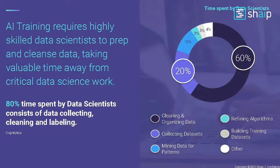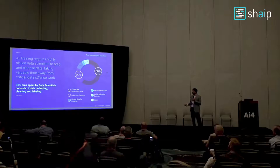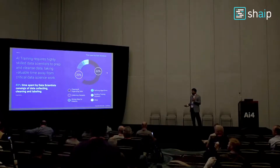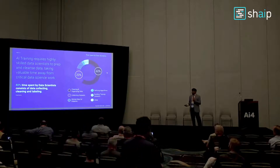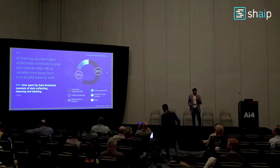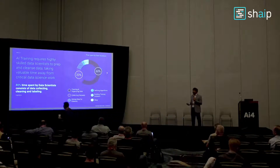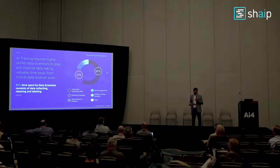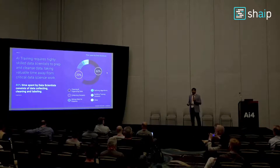We've also seen that the burden of finding good annotated quality data falls on data scientists. Today, data scientists spend about 80% of their time on data collecting, cleaning, and labeling. This is not what they were hired for and not the best use of their time. Many people working in the data science field will concur — they spend a lot of time just finding the right data rather than refining the models they're supposed to build.